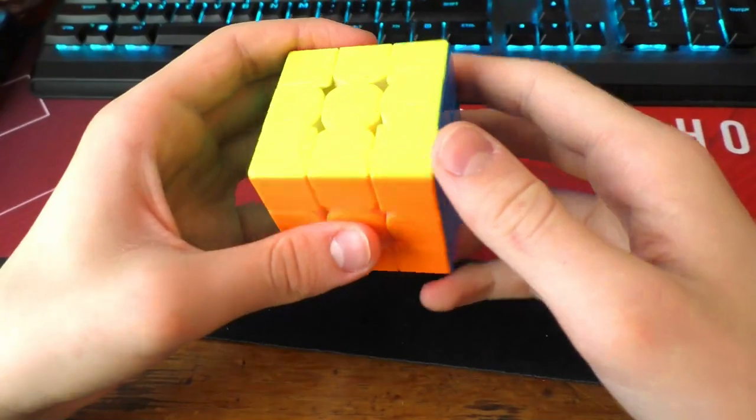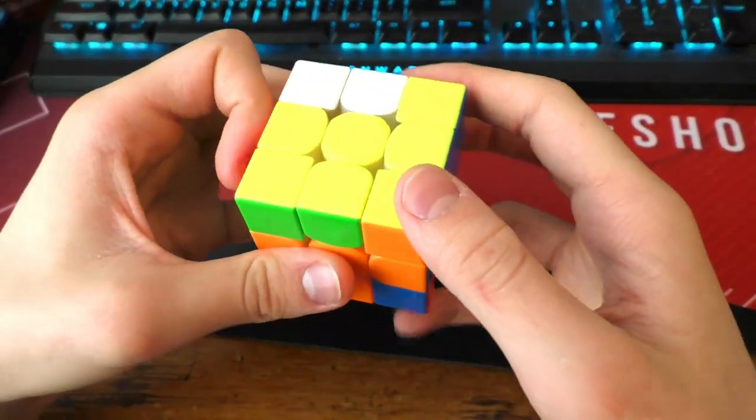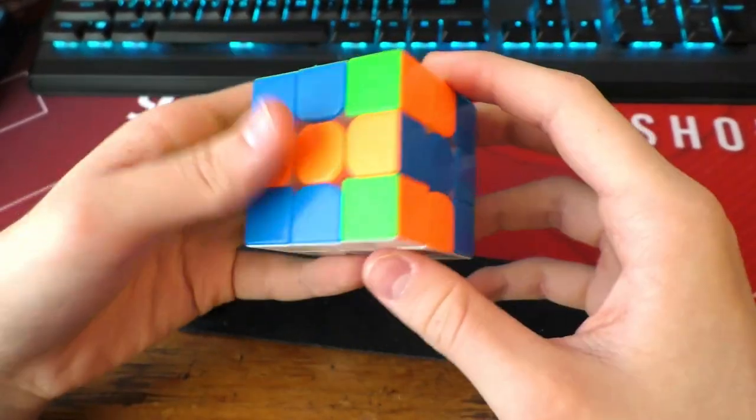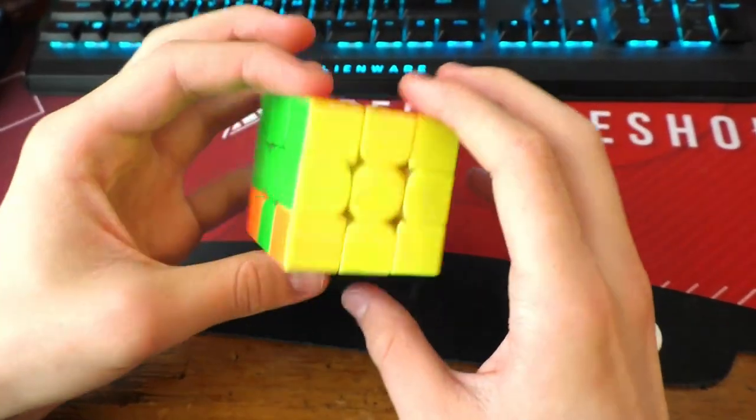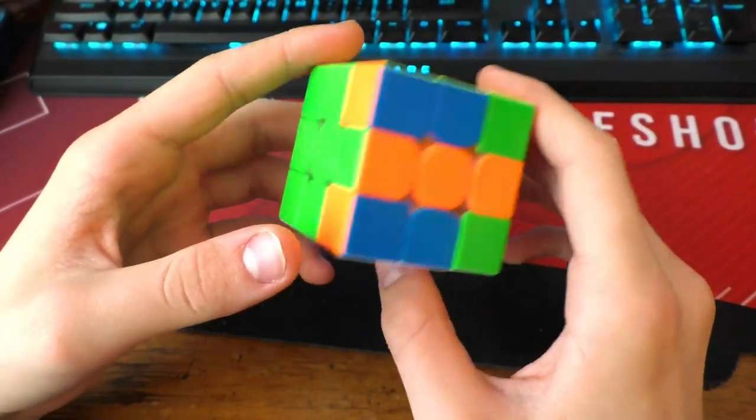Now let's try it on a normal cube. R2 U' R2 U D R2 D2 R2. Look. Two J-perms in eight moves. It would have been a lot more useful if it was only one J-perm.